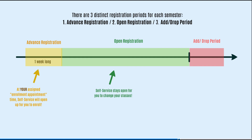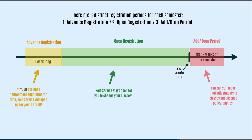Next, we move into open registration. This is the time period where self-service stays open for students to continue to add or drop classes and adjust their schedule. Lastly, the add-drop period is the first two weeks of the term where students can still make final adjustments to their schedule without financial penalty. However, because classes have officially started by then, the absence policy would be in effect.